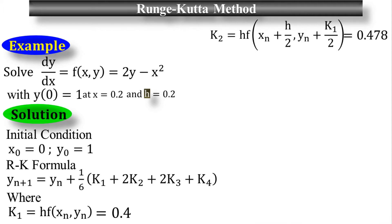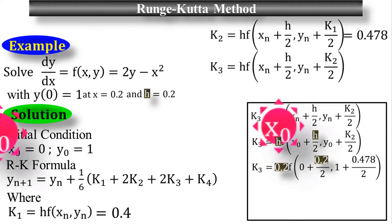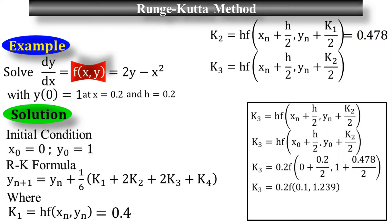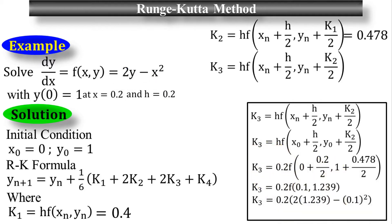For the third stage, the formula of k₃ is h times f(x_n plus h/2, y_n plus k₂/2). Substituting h equals 0.2, x_n equals 0, y_n equals 1, and k₂ equals 0.478, this simplifies to f(0.1, 1.239). Since f(x, y) equals 2y minus x squared, with y equals 1.239 and x equals 0.1, the final value for k₃ is 0.4936.